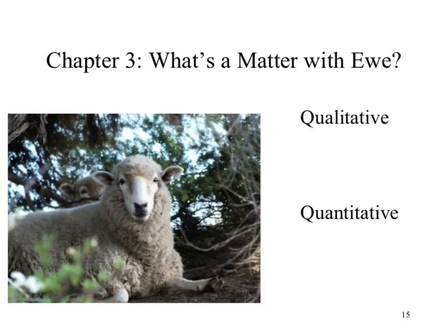What would be a qualitative observation? We could look at the amount of wool, or that sheep has a bunch of wool on it. So we're making kind of just a general observation. We could almost look at it as what I was already describing with the organic aspect - kind of our touchy-feely descriptions.